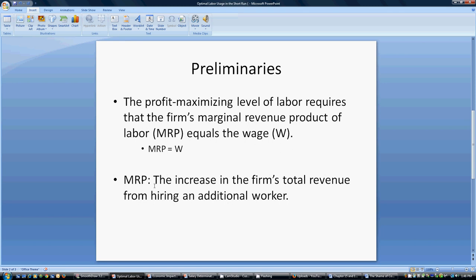The definition of marginal revenue product is the increase in the firm's total revenue from hiring an additional worker. This is the benefit of hiring one more worker. If you hire one more worker, that worker produces some goods. As a firm, you can sell those goods at a market price, and that will increase your total revenue.